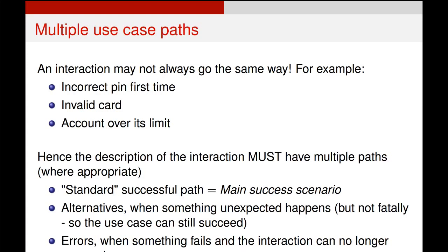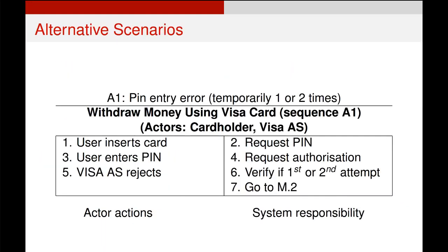The alternative scenario would be one of these that isn't a complete failure but means we have to go back to an earlier point. A complete failure would be something like an invalid card where we cannot proceed at all. For example, someone has entered the wrong pin and this is the first or second time they've done it. We follow our step-by-step process, get to step five, and the authentication system rejects the pin. Then our system checks if this is the user's first or second attempt and if it is, we go back to main sequence scenario two, which is requesting the user's pin again. This is an example of an alternative scenario because nothing fails — it just takes us back to an earlier stage in the main success scenario.